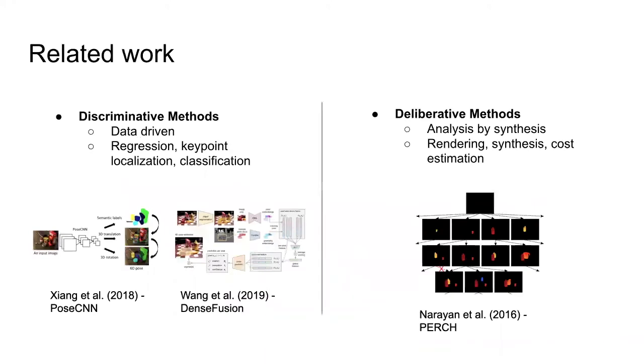The success of convolutional neural networks on 2D object detection has inspired a family of data-driven techniques that use deep neural networks for pose estimation from RGB inputs such as PosyCNN and DenseFusion. These discriminative methods predict the pose from the given observed scene through regression, keypoint localization, or classification. An alternative is to use deliberative approaches that rely on rendering, synthesis, and cost estimates to find the best explanation for the observed scene.